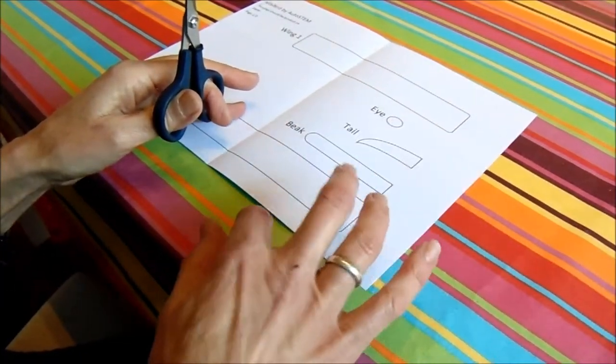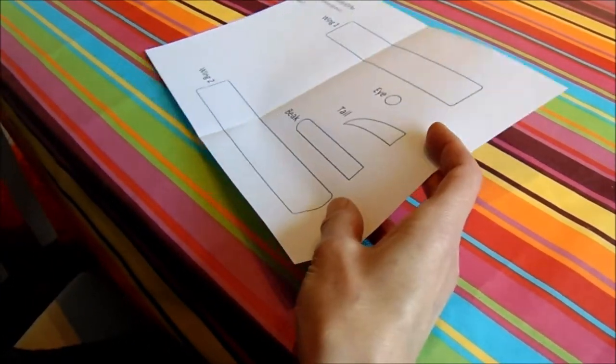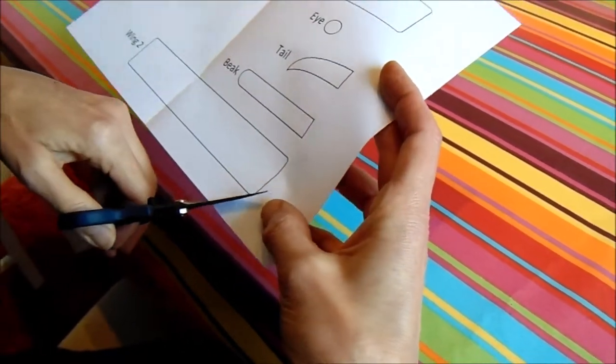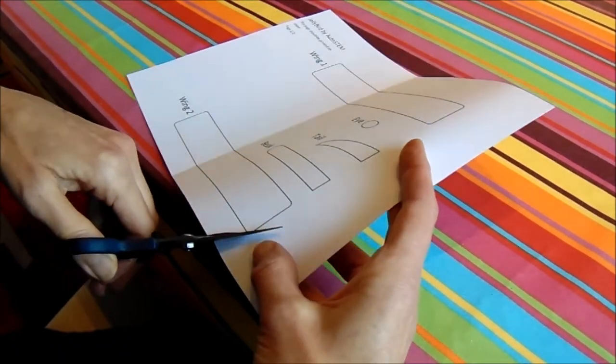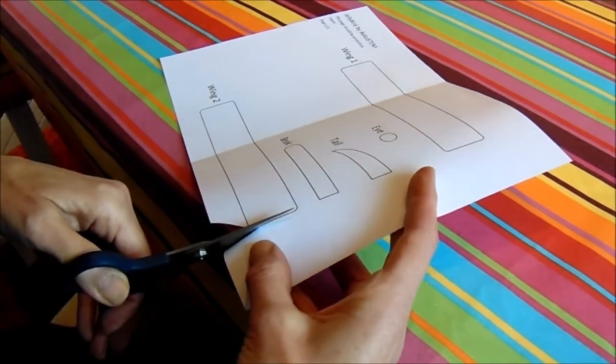The first job is to cut the paper and card shapes out and these can be done with just normal household or school type scissors that are always available.